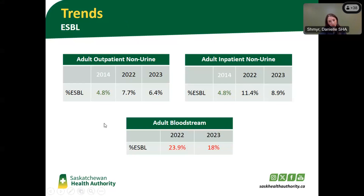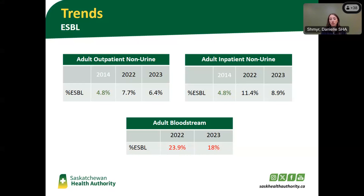When we look at the bloodstream samples — pooling all four organisms — we had about 111 samples. Last year it was 24%, and this year 18% of those were ESBL producers. Our counterparts to the south certainly have more gram-negative resistance than we do, but I do wonder if we're starting to see the signal of more ESBLs and more gram-negative resistance — we're only going to see more of it, and it's here to stay.